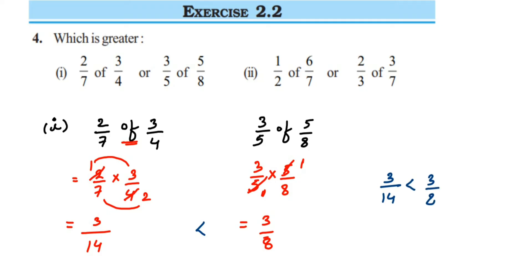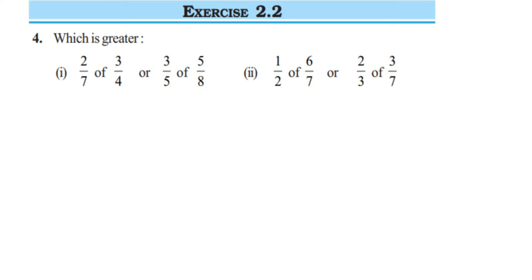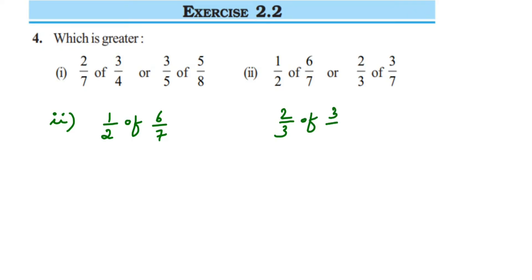This method can be applied to any numbers instead of taking the LCM. Now for the second question: we have 1/2 of 6/7, and the second number is 2/3 of 3/7. First multiply and bring to reduced form if possible.